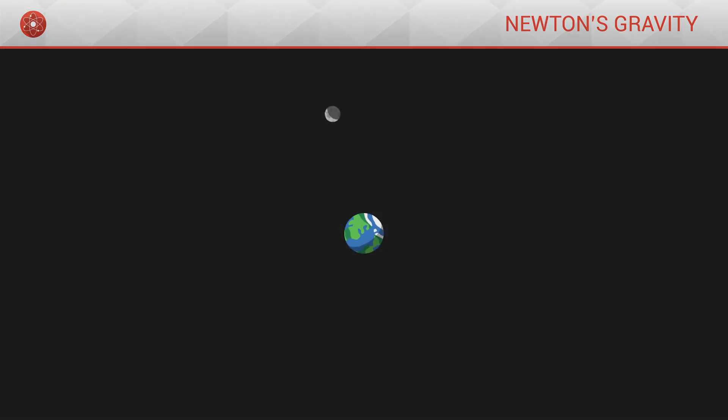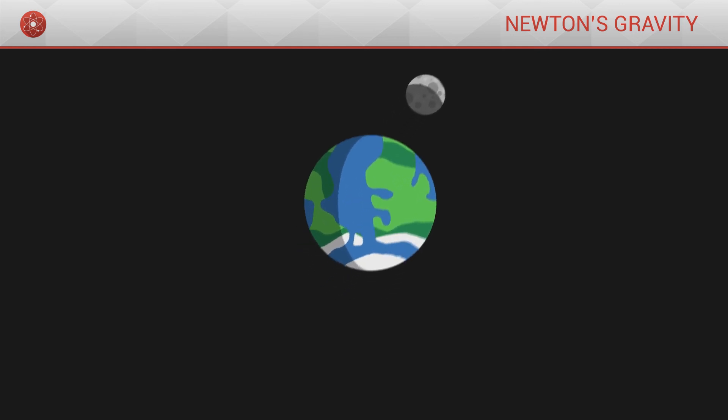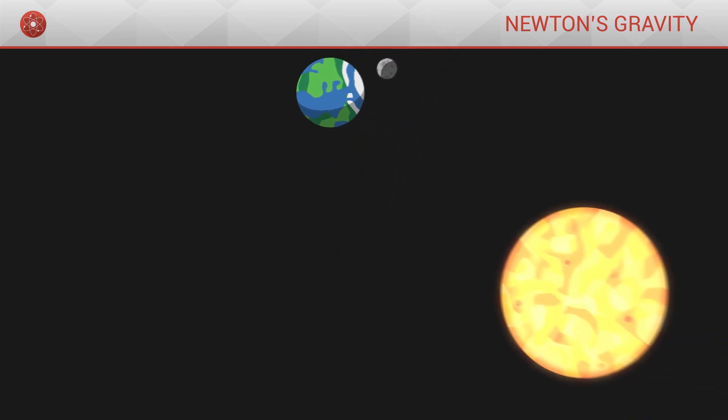This is what happens with the Moon, and that is why the Moon orbits around the Earth, as well as why the Earth orbits around the Sun.